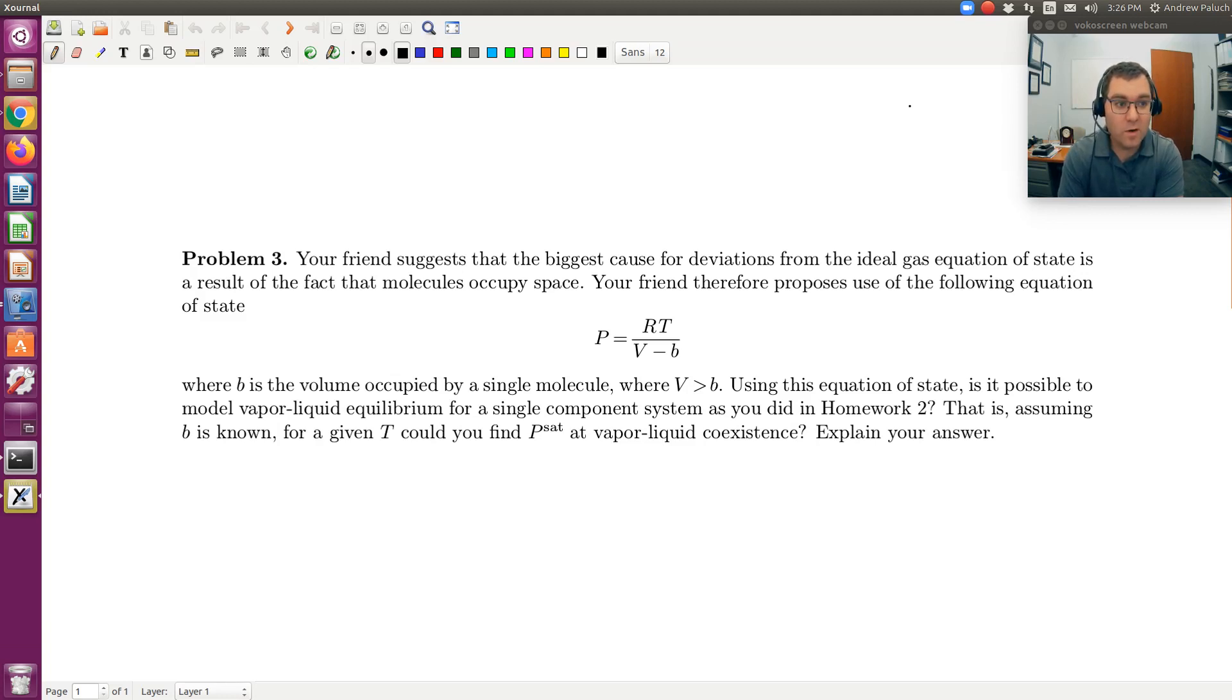So essentially it's our ideal gas equation of state, P equals RT over V, but now instead of V we're replacing it with V minus B, which will give us the free volume. So B is going to be the volume occupied by a single molecule, V is the molar volume, so V minus B is essentially the free volume available to the molecules in our system.